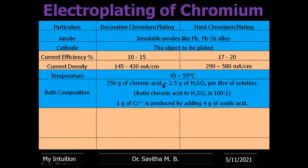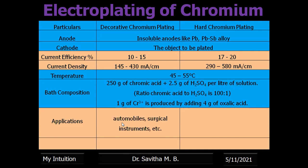The bath composition — what you take as the electrolyte — is a 100:1 ratio of chromic acid to sulfuric acid. By adding 4 grams of oxalic acid, 1 gram of chromium 3+ is produced, so we should also add oxalic acid.